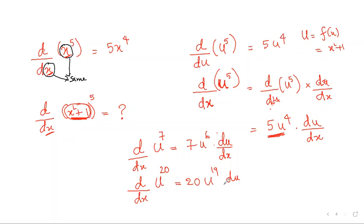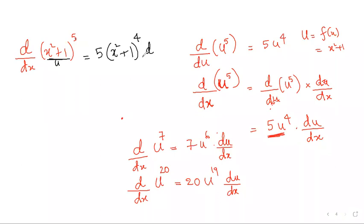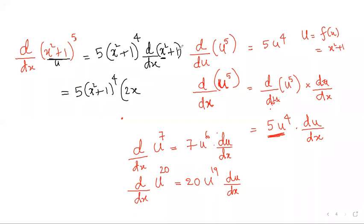Applying this formula to d/dx of (x² + 1)⁵: let u = x² + 1. Answer is 5u⁴·(du/dx) = 5(x² + 1)⁴·(d/dx of x² + 1) = 5(x² + 1)⁴·2x = 10x(x² + 1)⁴.